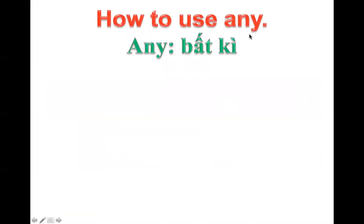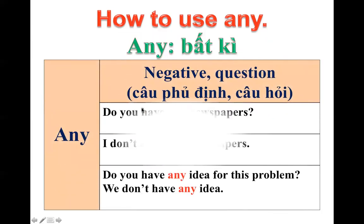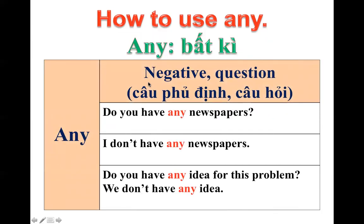Đó là how to use ANY — cách sử dụng từ ANY. ANY ở đây có nghĩa là bất kỳ. ANY chúng ta sử dụng như thế nào, có giống với SOME hay không? Thì ANY chúng ta sẽ sử dụng với câu NEGATIVE là câu phủ định và QUESTION là câu hỏi. Nó khác với SOME — SOME dùng trong câu khẳng định, ANY dùng trong câu hỏi và câu phủ định.